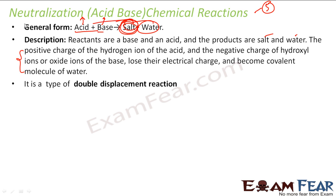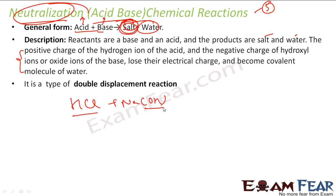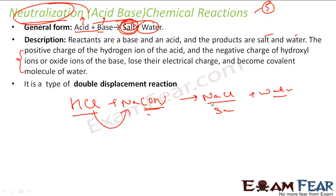For example, take hydrochloric acid (HCl) as the acid and NaOH as the base. When they react, you get NaCl as the salt and H₂O as water. The chlorine pairs with Na to form NaCl, and H pairs with OH to form H₂O. This is a typical acid-base and double displacement reaction, also called a neutralization reaction.